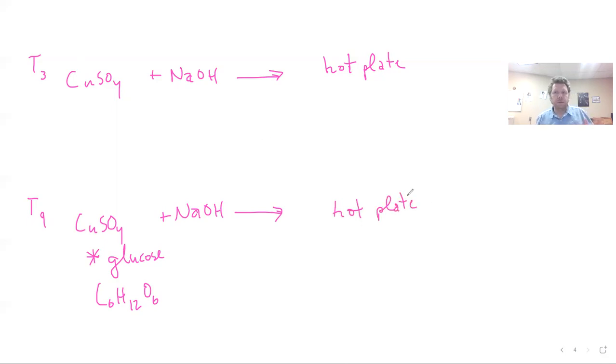And you're going to observe some differences that take place. And while you're going to form different compounds, after putting this on a hot plate, you're going to form something known as copper oxide. And then in this other instance, when we have glucose, well.